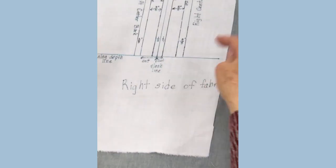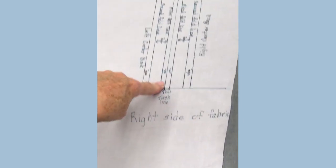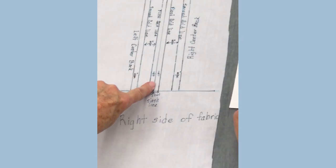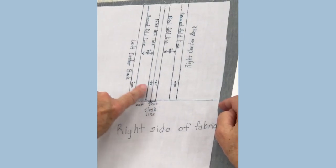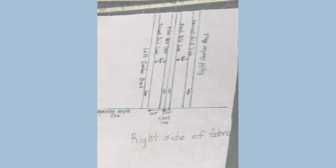That is the opening depth line, so you know where to stop everything. After you've drawn the center slash line, draw another line 1/4 of an inch on each side of that. Those are shown right here on the sample.